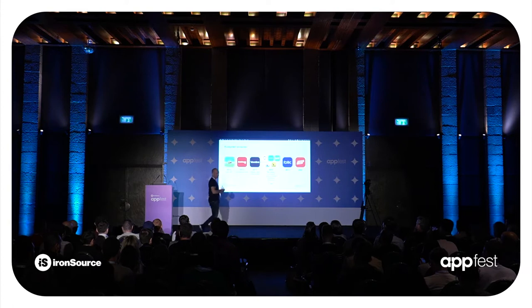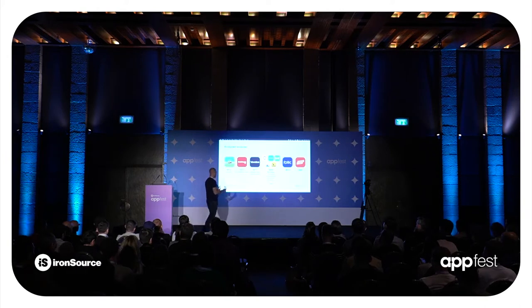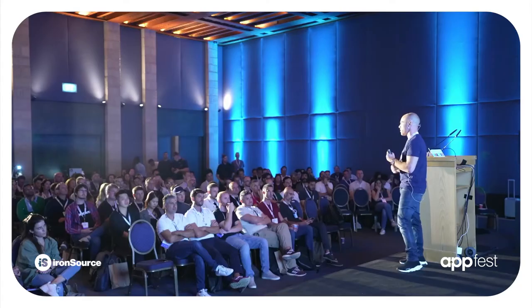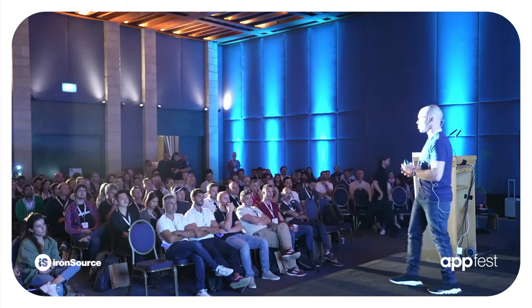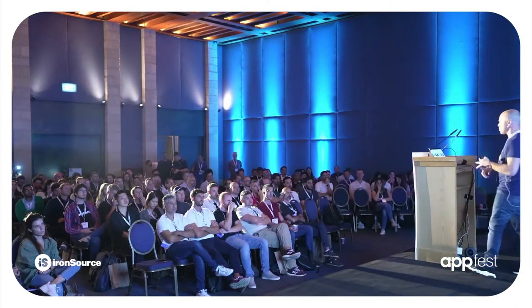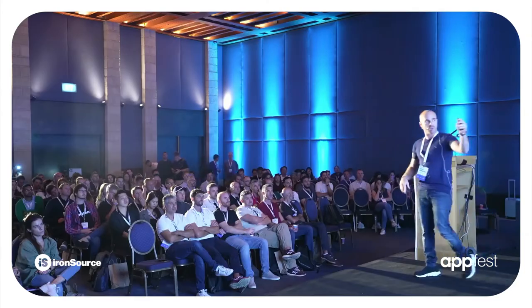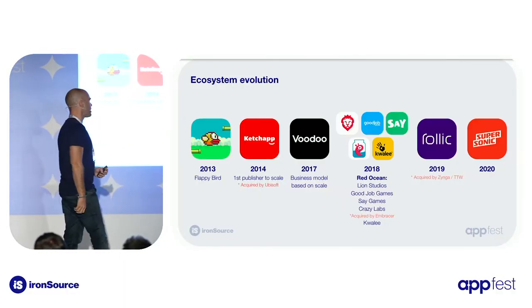Then Voodoo came in 2017 and actually proved to the world that you can compete with MachineZone on winning impressions as an advertiser. Even if you bid 40 cents and MachineZone bids $10, you can win the impression if your ad creative converts well enough. After they succeeded in 2017 with several launches one after another, it led to this red ocean where everybody jumped into the growing ecosystem — with App Loving, Lion, GoodJobGames, SayGames, CrazyLabs, Voodoo, Qualijoy, and many others.